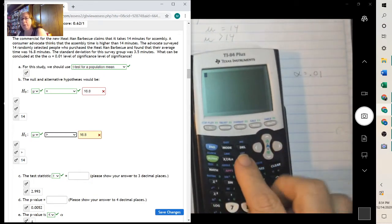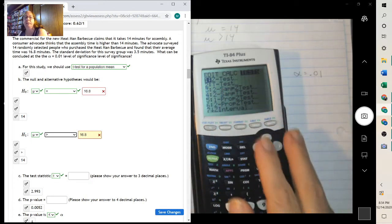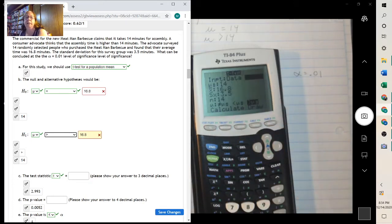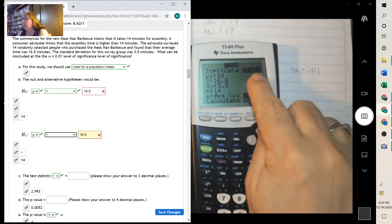So we go stat over to test, test, and we want the second one, the t-test, and hit enter. We're using statistics. So this one's stats.